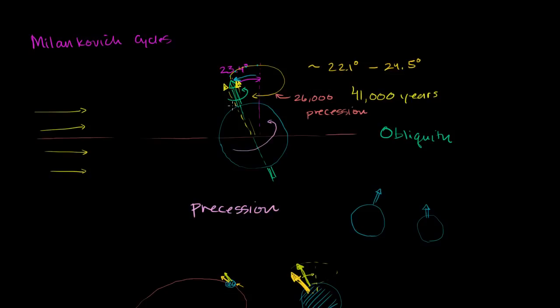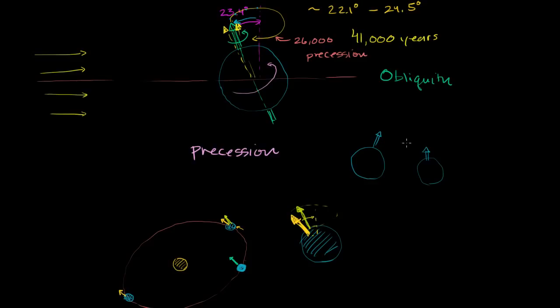Precession is another factor that plays into Milankovitch cycles. When you combine changes in precession with changes in tilt, and with changes in how circular or elliptical Earth's orbit is and how that changes over time, you have a respectable way of explaining why Earth has entered into these climatic cycles over many tens of thousands of years.